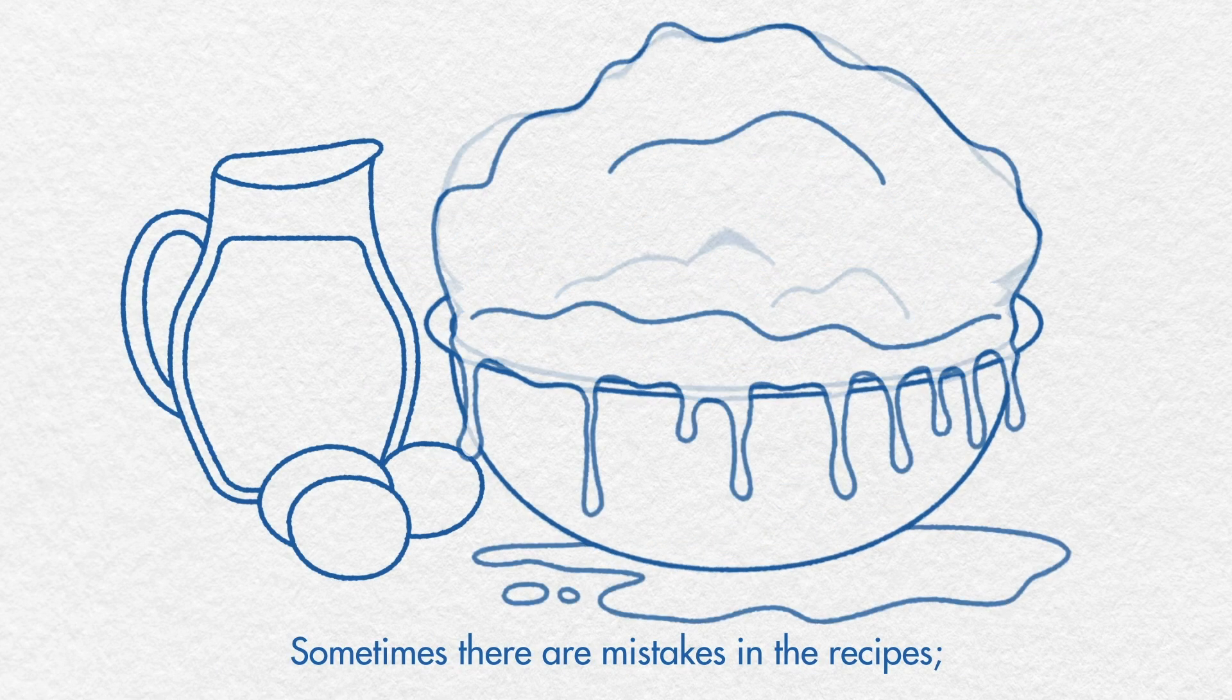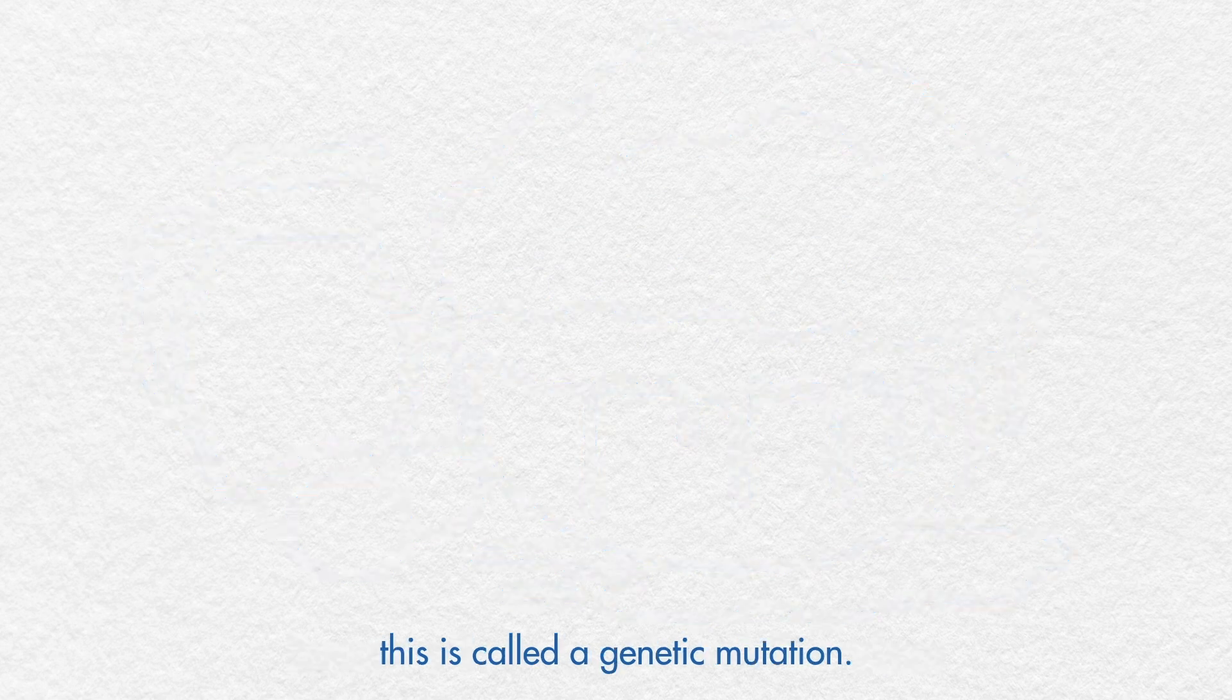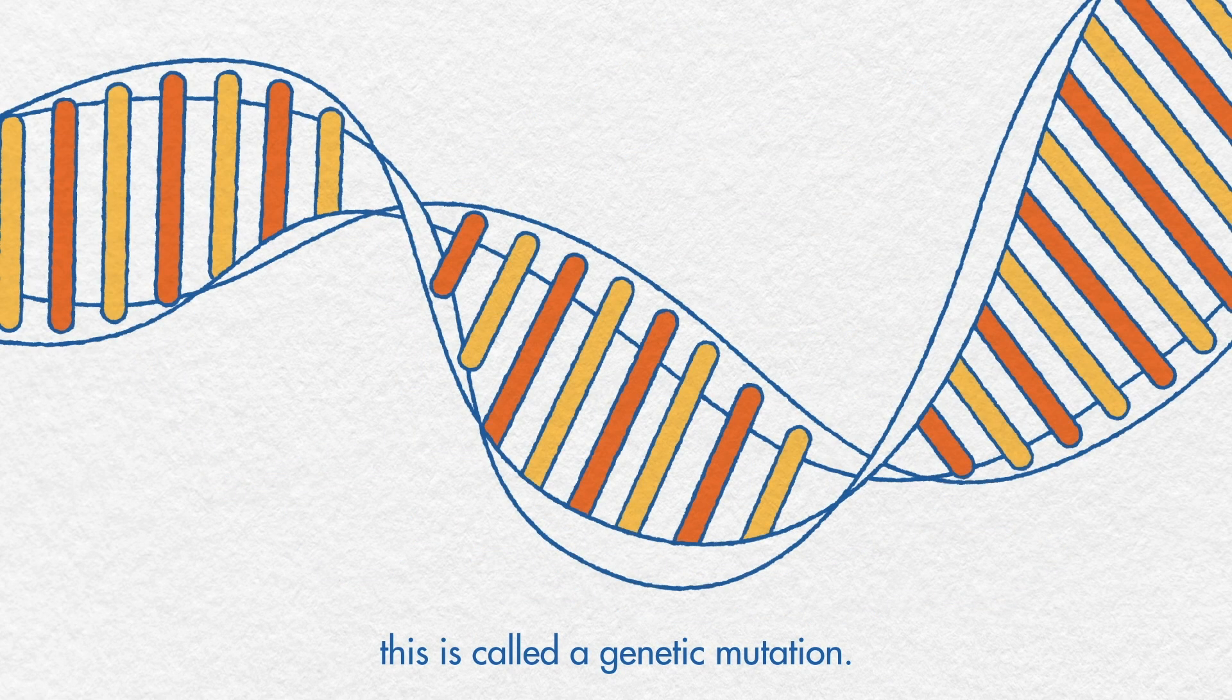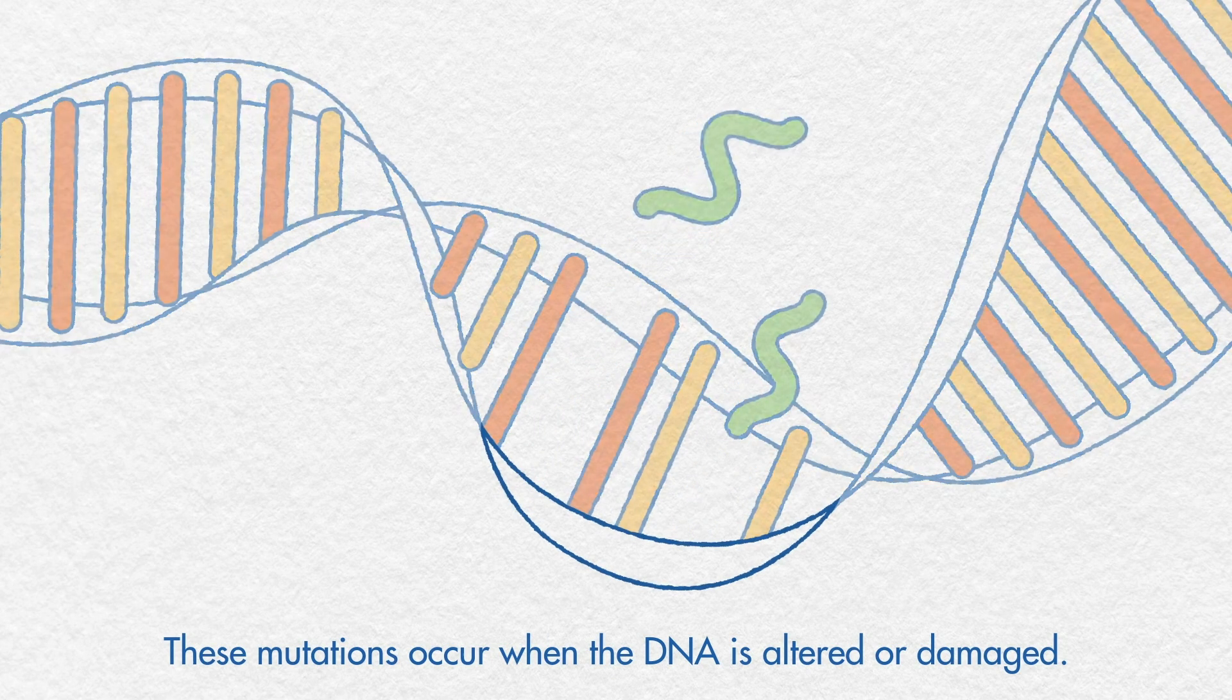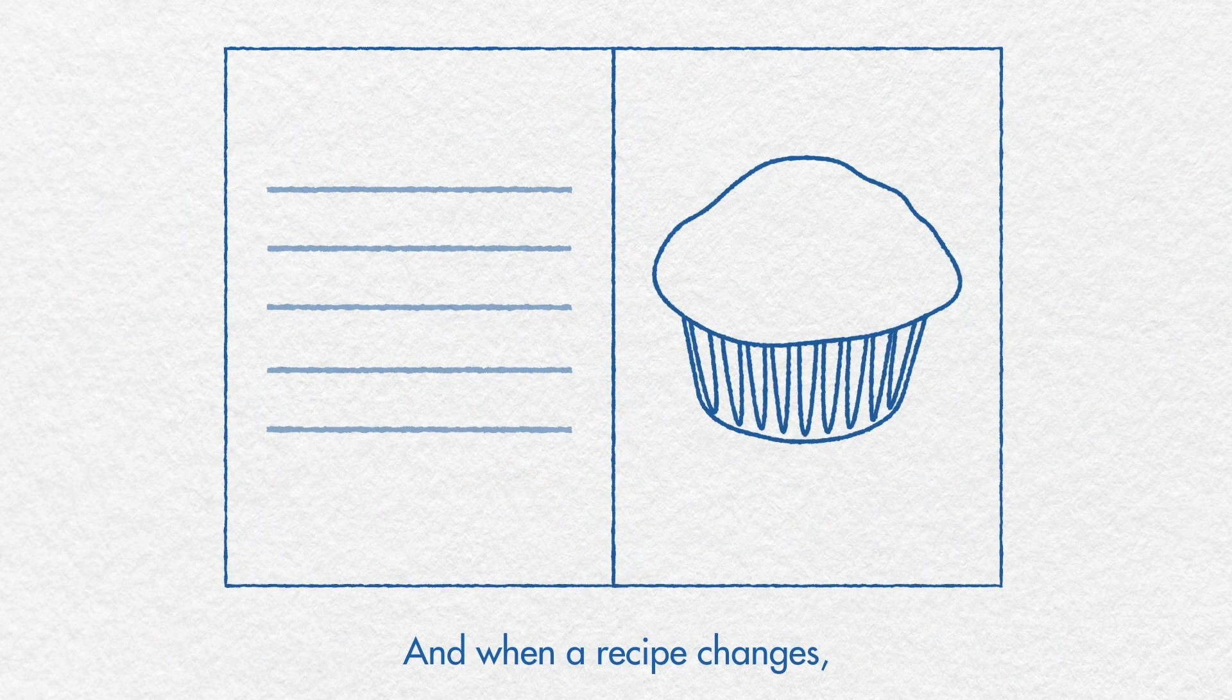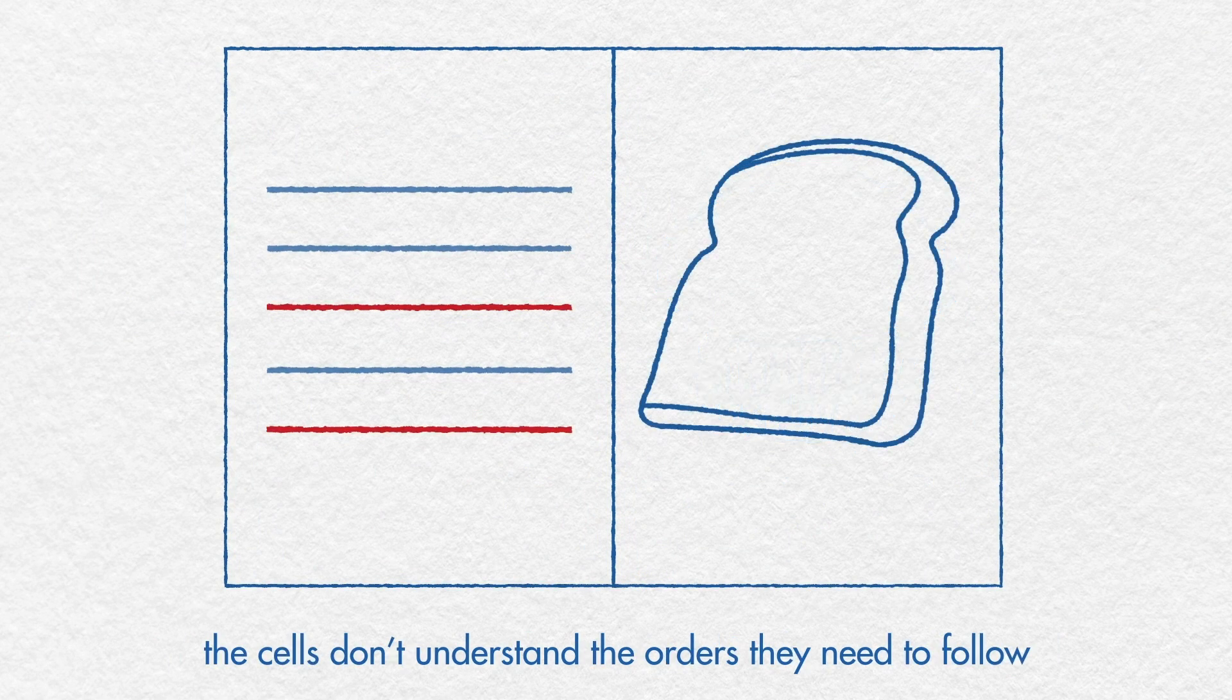Sometimes there are mistakes in the recipes. This is called a genetic mutation. These mutations occur when the DNA is altered or damaged. And when a recipe changes, the cells don't understand the orders they need to follow as well as they should.